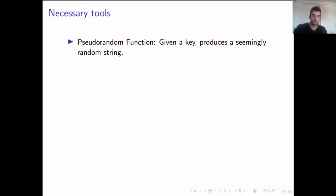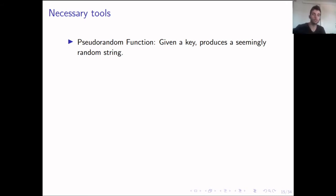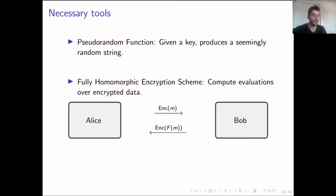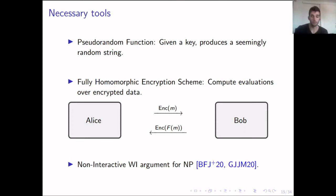We also need some additional tools. First, a pseudorandom function — a generator produces a key, and given the key we can input it into a function that produces a seemingly random string. We also use a fully homomorphic encryption scheme, where we can perform computations on encrypted data without first decrypting. Finally, we use a witness indistinguishability argument for NP, which is non-interactive and can be done in one round.